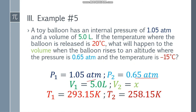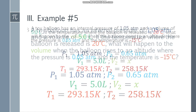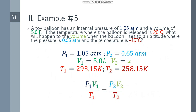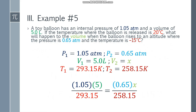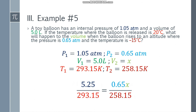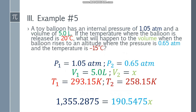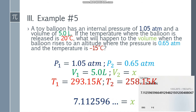Both pressures are in atm, so we can solve the problem. Place the formula and substitute the values: 1.05 times 5 over 293.15 equals 0.65 times x over 258.15. Simplify the numerator and cross multiply: we get 1,355.2875 on the left side and 190.5475x on the right side. Dividing both sides by 190.5475, x equals 7.112596...